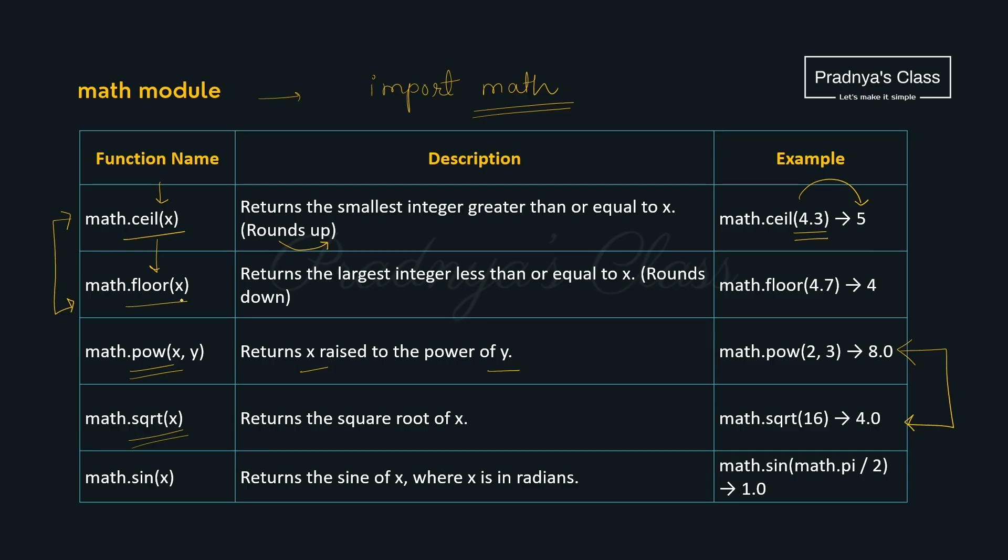The reverse of it is a floor function. Always floor will be in the down. That's why it rounds down. Look at the example. 4.7 will be 4. It is rounding down. It means floor function will round to this integer value.